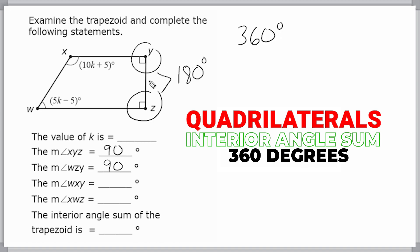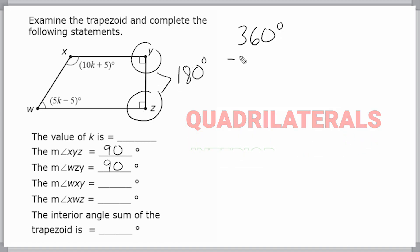So if these two angles are 180, we can take away 180 from that total of 360 and see that we still have 180 degrees remaining, which means this angle and this angle are 180 degrees total.